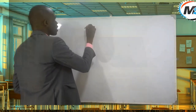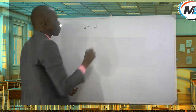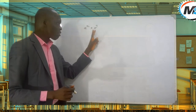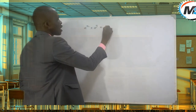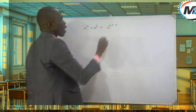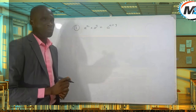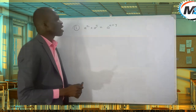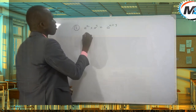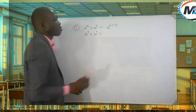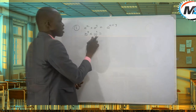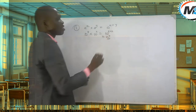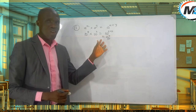The first law is: a raised to power x, multiplied by a raised to power y — notice both have the same base a — this gives us a raised to power x plus y. For example, if you have 10 raised to power 5, multiplied by 10 raised to power 2, simplify this: 10 is the base in both, so this gives us 10 raised to power 5 plus 2, which gives us 10 raised to power 7.